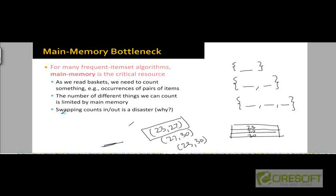Having a lot of swapping to and from the disk is going to be a disaster because that's going to increase the time the algorithm takes to run. This is called thrashing — the algorithm will be very frequently fetching disk blocks to main memory and storing them back. We have to ensure that our main memory is large enough that all counts can be maintained and updated in main memory as we pass through the huge file of transactions.